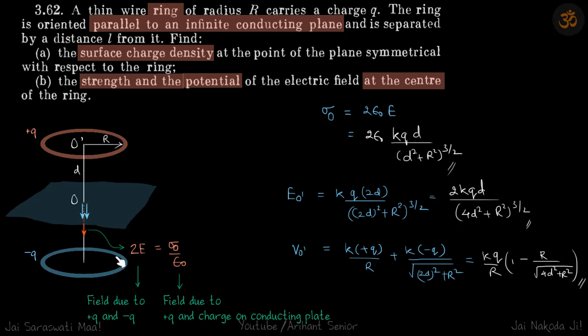So field is kq into 2d by (2d squared plus r squared) to the power 3/2. And potential at this point - it will be potential due to this ring plus potential due to this ring.